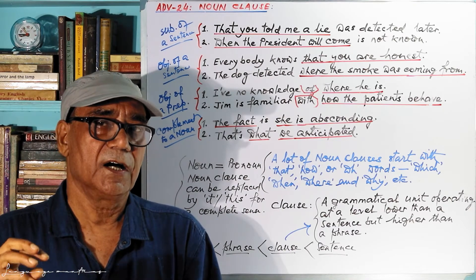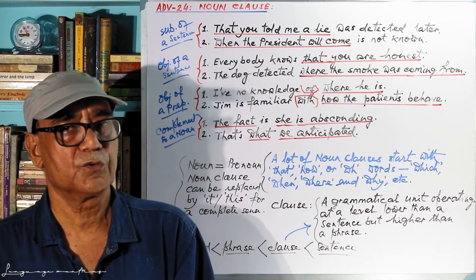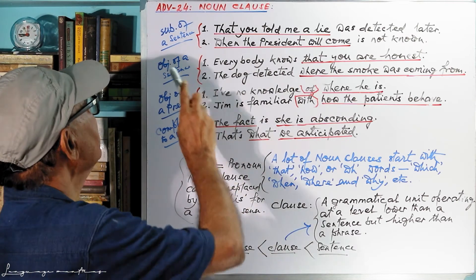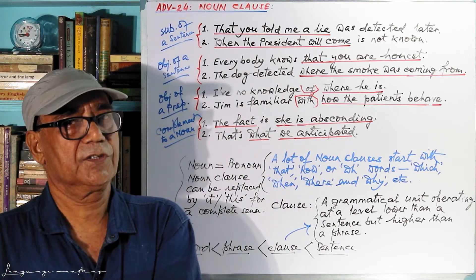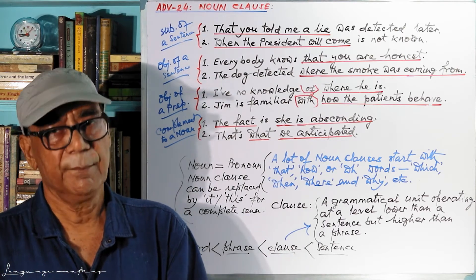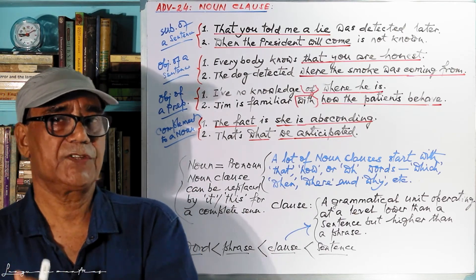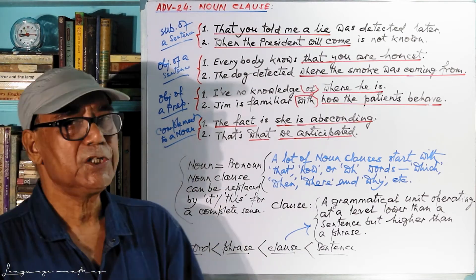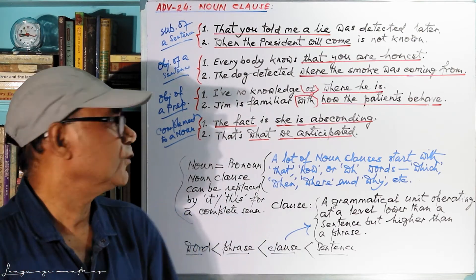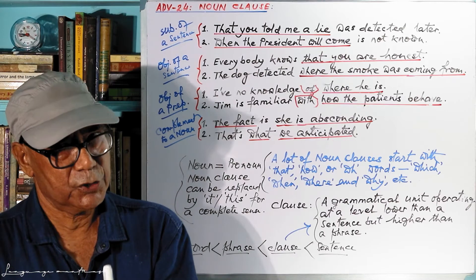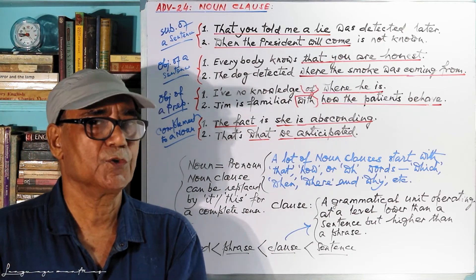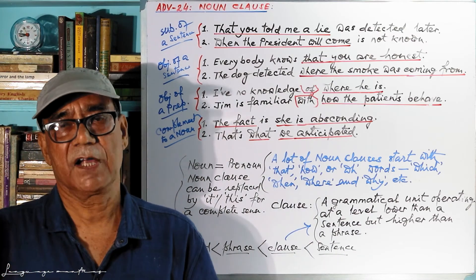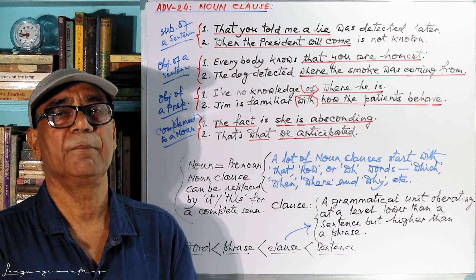This is the same as the function of a noun. A noun clause can serve as: number one, the subject of a sentence; number two, the object of a sentence; number three, the object of a preposition; and number four, a complement to a noun. There may be other functions also, but these are perhaps the most important. Let's see them one by one.